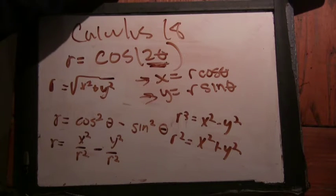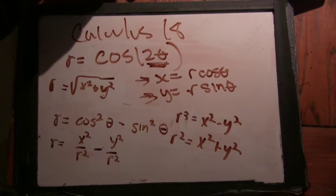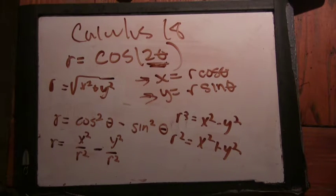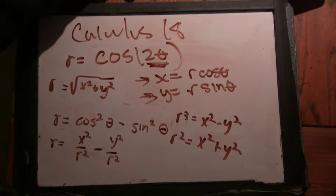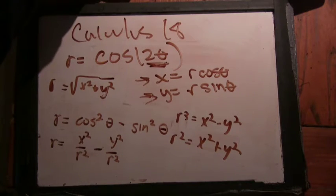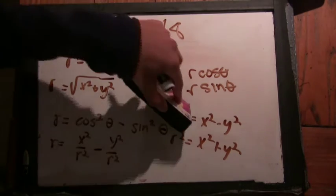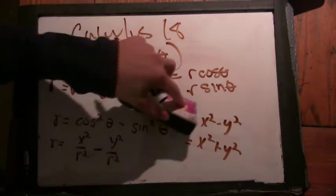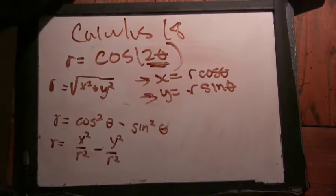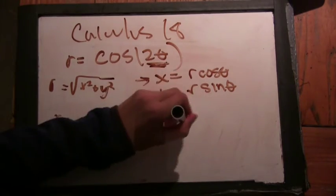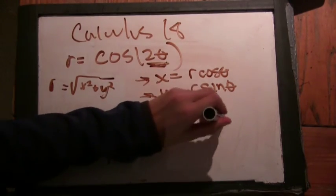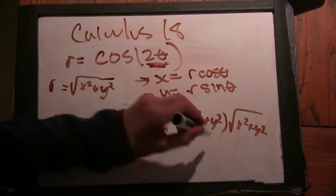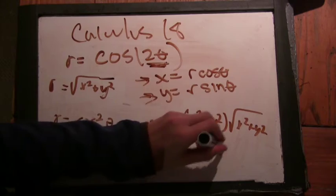r³ equals x² - y². If I want to put that entirely in terms of x's and y's, what does that equation become? So we're going to change r into x's and y's. Yeah. So that's going to say we have (x² + y²)·√(x² + y²) equals x² - y².